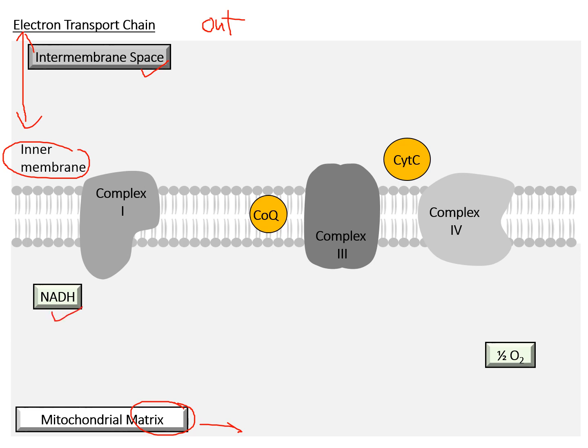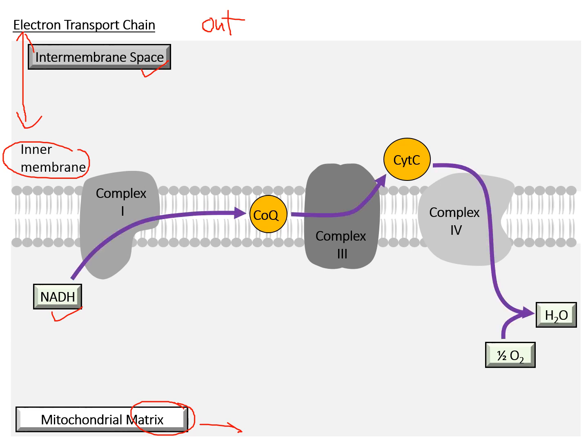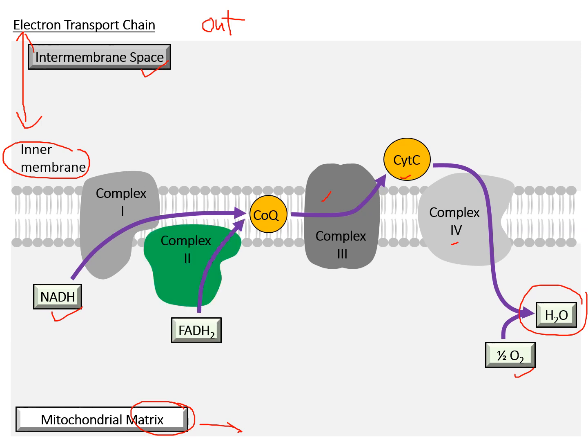NADH is fully charged with high energy electrons released from the oxidation of acetyl coenzyme A. These electrons are passed first to complex 1, then through coenzyme Q to complex 3, then to cytochrome C before passing to complex 4, and eventually to the oxygen molecule — the final electron acceptor. By receiving the electrons, oxygen is fully reduced into a water molecule. This is when the first water molecule is produced in respiration.